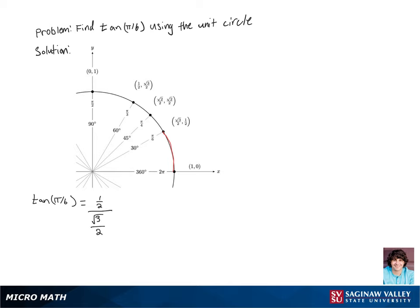Dividing by fractions is the same as multiplying by its reciprocal, so we get 2 over 2√3, and then we can cancel out some 2's here.